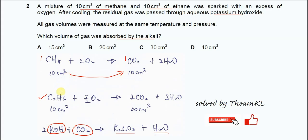For ethane, when we use 10 cm³ of ethane it will form 20 cm³ of CO2, because their mole ratio is 1 to 2.